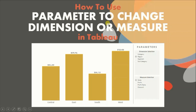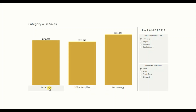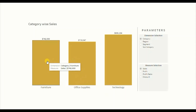In today's session we will see how to use a parameter to change the dimensions or measures that we have in the view. Let me first show you the demo of what we will be doing today. Here I have a bar chart that shows sales of different categories in the dataset. The requirement is that we have to give the user functionality to change the dimension — that is category — or the measure — that is sales — in this bar chart.